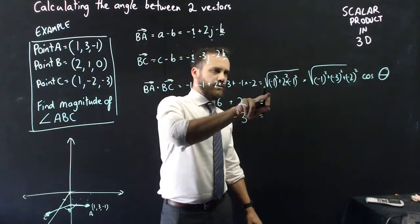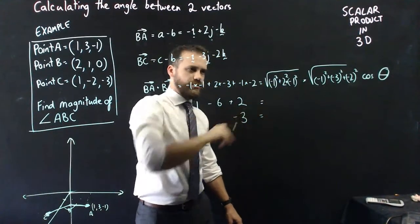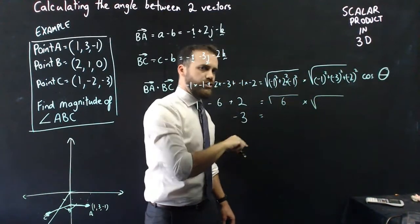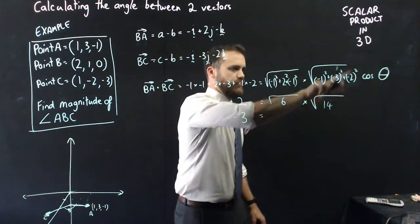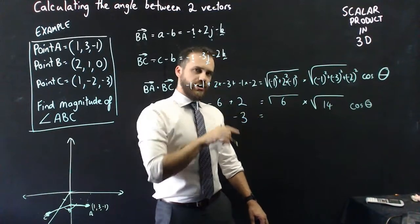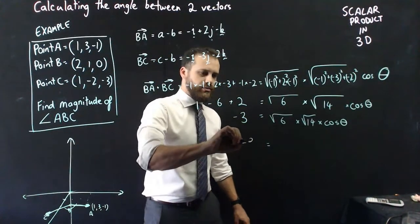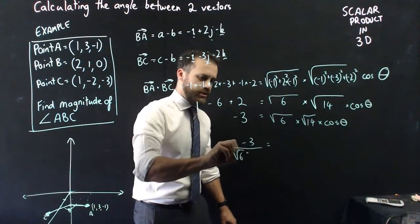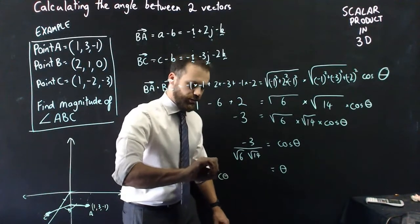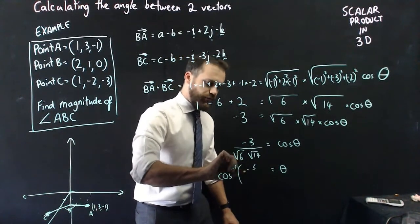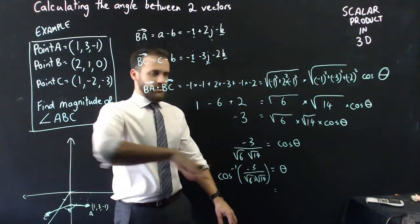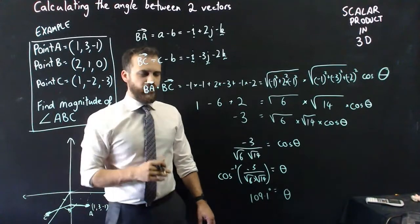Now I need the magnitude-magnitude-cosine-theta form. The magnitude of BA is the square root of (1 squared plus 2 squared plus 1 squared) = root 6. The magnitude of BC is the square root of (1 plus 9 plus 4) = root 14. So negative three equals root 6 times root 14 times cosine theta. Rearranging: theta equals cosine inverse of negative three over root 6 times root 14, which gives theta equals 109.1 degrees.